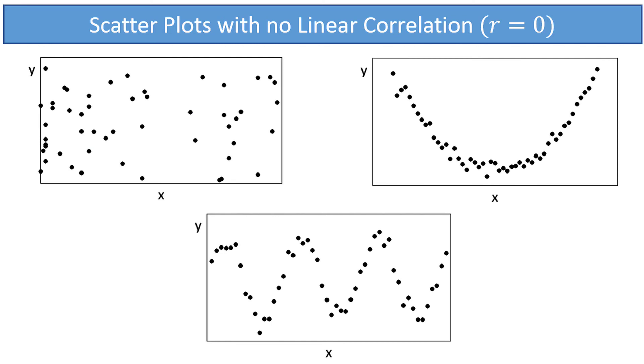In the second scatter plot, there is a relationship between x and y, but it isn't linear, and therefore a straight line doesn't really fit the data very well at all. The situation is similar with a third plot. There is a relationship between x and y, but it isn't linear.